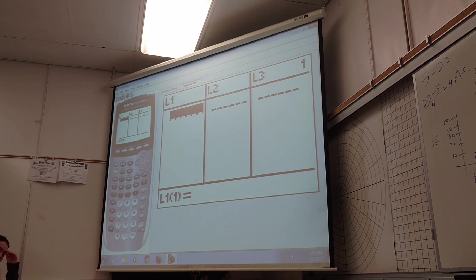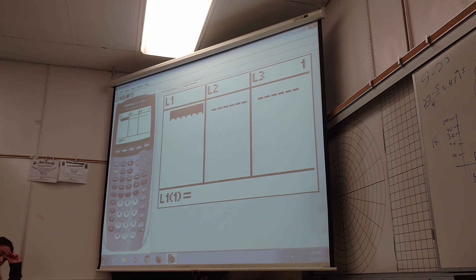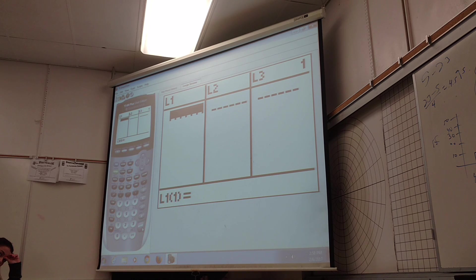Put all those variables into list one. I'll do it too. So in there it goes, 66, enter. Keep going.